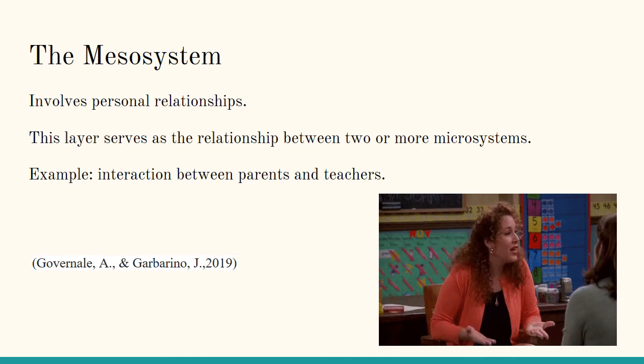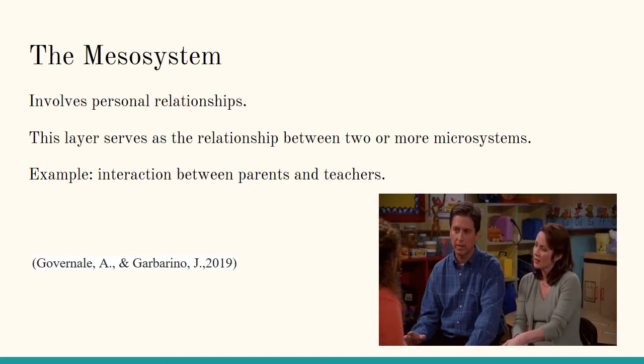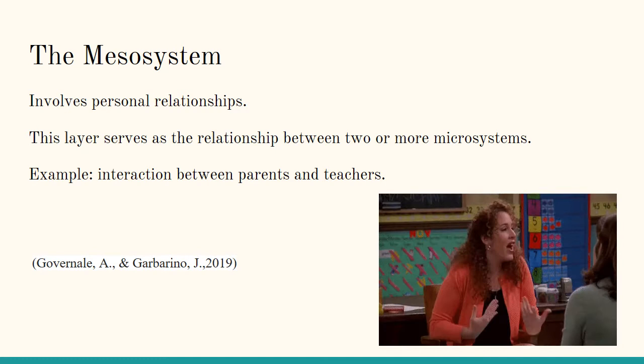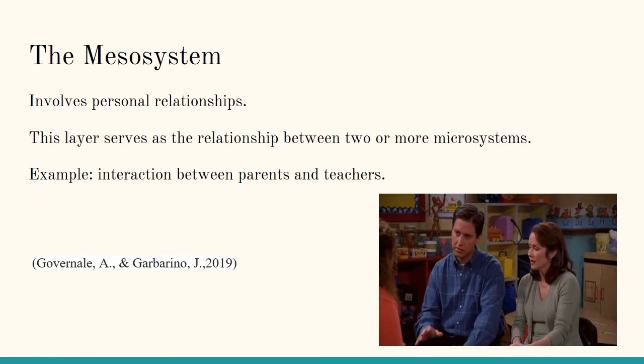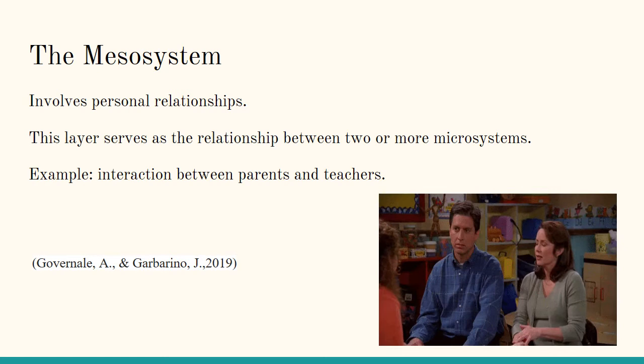Activities, roles, and relationships a teen has in one microsystem and how these support or undermine his or her development in another microsystem should be considered. Helping the youth understand the similarities and differences in how he or she operates in each microsystem will improve his or her social functioning. Additionally, modifying the environment can help the individual be successful in a different or new microsystem.